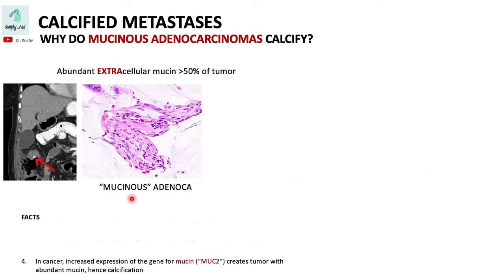When there is abundant mucin, there is also a large amount of calcium — and this can explain why tumoral calcifications are present. Take a look at this picture: a tumor with tumoral calcification.